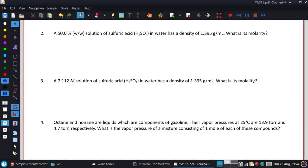On number two, we have a 50% weight-to-weight solution of sulfuric acid, H2SO4, in water with a density of 1.395 grams per milliliter. We want to know what its molarity is.